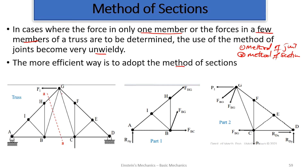Let's consider this truss. If I'm to just determine the force in member GF or member FCD, and I go by the method of joints, I'll have to take the joints one by one to know everything — which is a lot of work. So a simpler method is the method of sections.